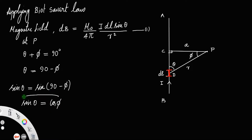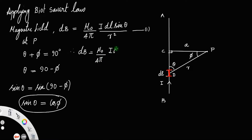Now you can replace sin theta using cos phi. Therefore, dB is equal to μ₀ by 4π, i dL, and instead of sin theta you can write cos phi, divided by r square. Let us call this as equation number 2.